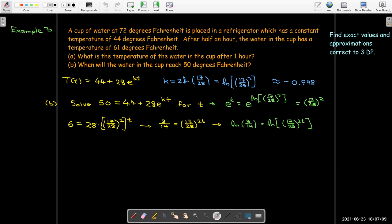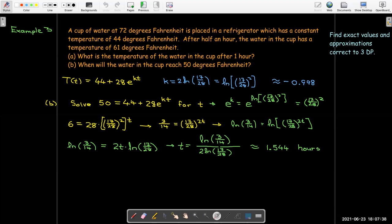Now what I'm going to do is take the log of both sides. The natural log of 3/14ths would be the natural log of 17 over 28 raised to the power of 2t. I'll use the property of log to bring the 2t out in front and go ahead and solve for t. And now I'll take out my calculator and get my decimal approximation.